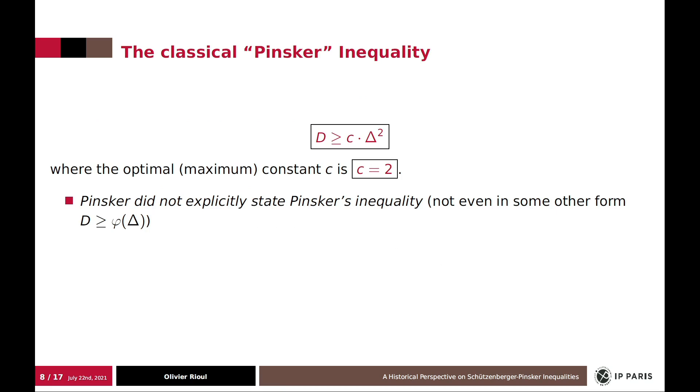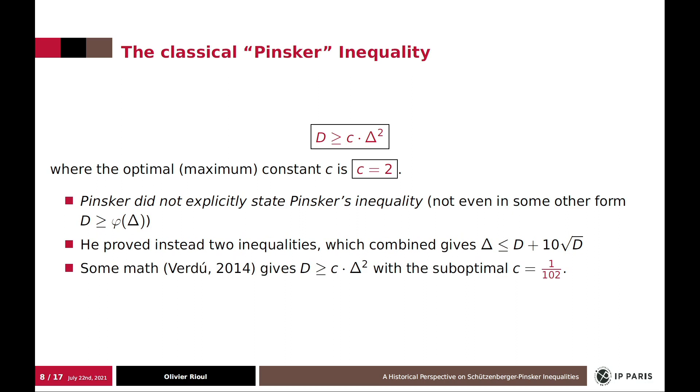As a matter of fact, I found that Pinsker did not explicitly state Pinsker inequality, not even in the general form. Instead, he proved two different inequalities, very involved proofs. And which combined give this inequality. And now doing some maths, it can be shown that it indeed gives a classical Pinsker inequality, but with a very suboptimal constant instead of the optimal two.